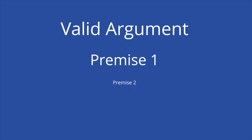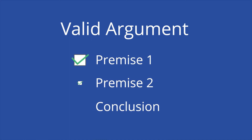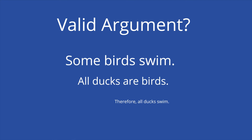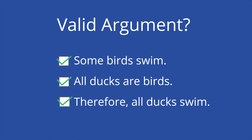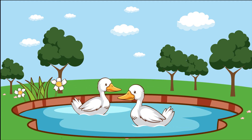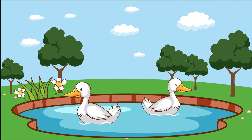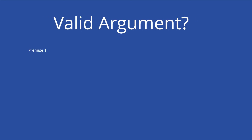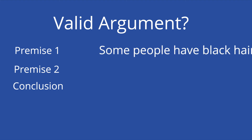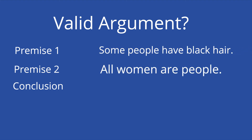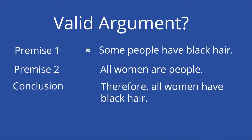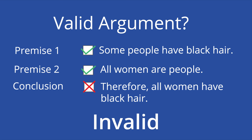Counter-examples are also useful in disproving the validity of an argument. An argument is valid when the conclusion cannot be false if all the premises are true. Consider this argument: some birds swim; all ducks are birds; therefore all ducks swim. Both the premises and the conclusion are true, but it is not valid. To prove this, we can construct a counter-example with the same argument form that has true premises and a false conclusion: some people have black hair; all women are people; therefore all women have black hair. Although both premises are true, the conclusion is false, meaning this argument form is invalid. This argument operates as a counter-example to disprove the original argument.